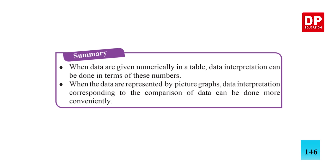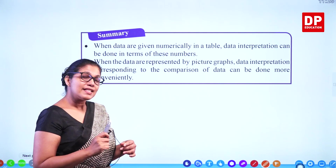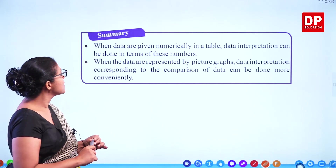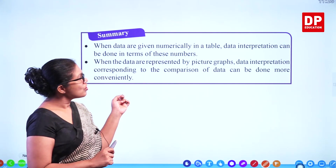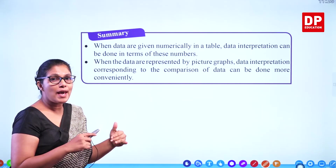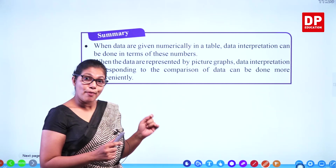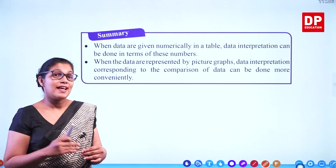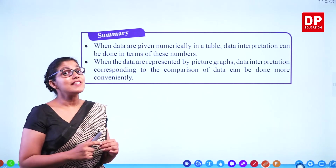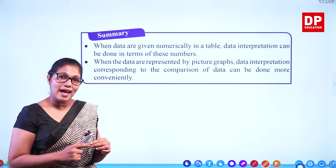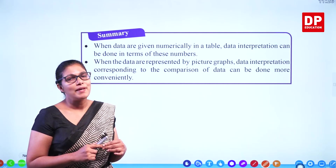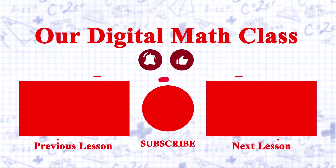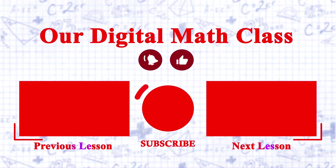We covered all theory related to data interpretation. In this lesson we discussed how to interpret data using tables and picture graphs, comparing data by looking at graphs and tables. This is an important lesson in statistics, which continues in grades 7, 8 and through O levels and A level combined maths. Practice and see how you can interpret data using tables and picture graphs.